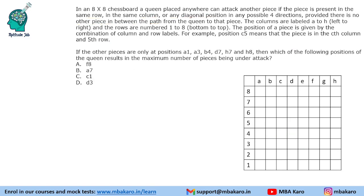Next question: if the other pieces are only at positions A1, A3, B4, D3, D7, H7, and H8, which of the following queen positions results in the maximum number of pieces being under attack? The difference from the previous question is we will be using the blocking condition, which was not relevant in the previous case.